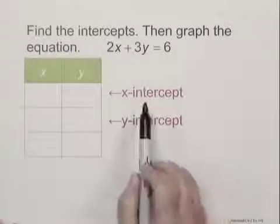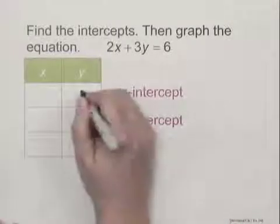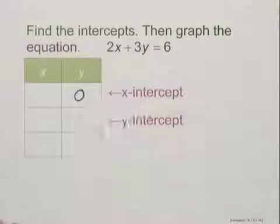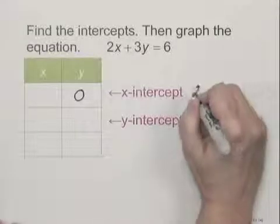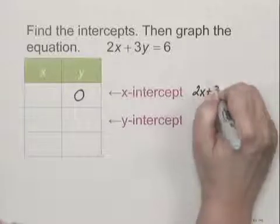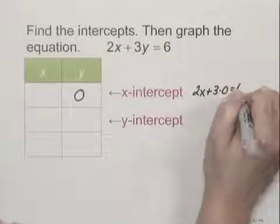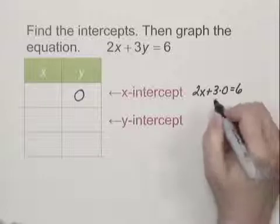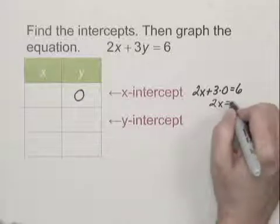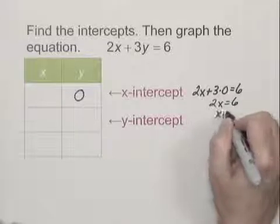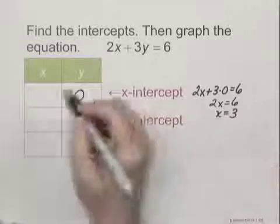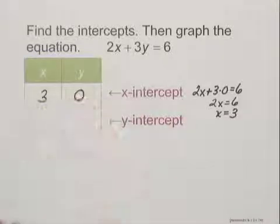To find the x-intercept, we let y be 0 and then we solve for x. That would give us 2x plus 3 times 0 equals 6. 3 times 0 is 0, so we have 2x equals 6, or x equals 3. So the x-intercept would be (3, 0).